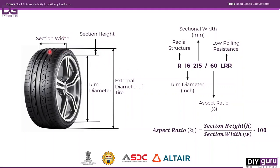The tire specification is R16 215/60 LRR. The first part 'R' stands for radial structure. Tires are made in two types: radial and cross-ply. Radial tires are used in passenger vehicles or light vehicles, while cross-ply or bias-ply tires are used in heavy vehicles like trucks.